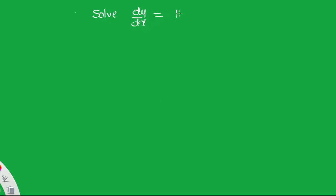Let us solve: dy/dx = (1 + y²) / (1 + x²). Here you can see dy on one side and dx on the other. The expression containing y is (1 + y²) and the expression containing x is (1 + x²).